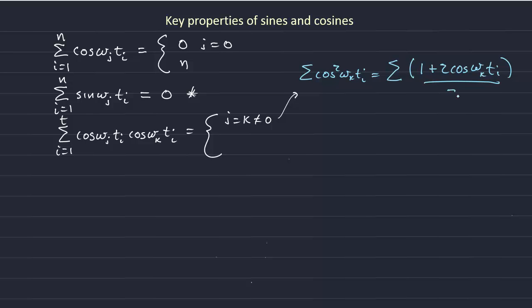That gives n over 2 plus the sum of this, which sums to 0. So from the first identity or the first equation, we get n over 2 if j is not equal to k, and both are not equal to 0.